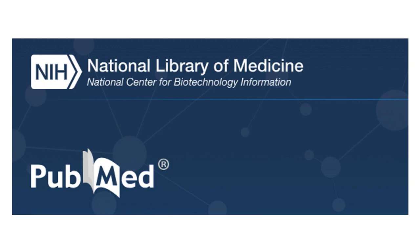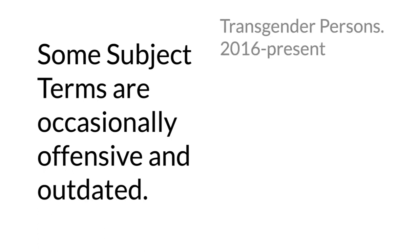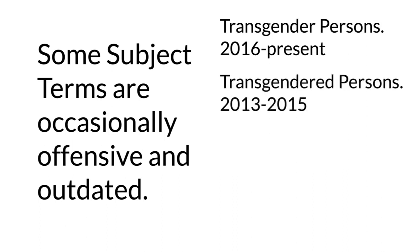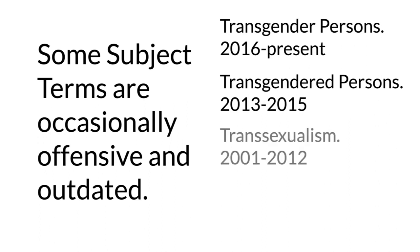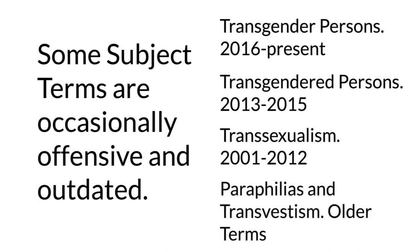One final thing to be mindful of when using subject terms is that they occasionally get updated. This is a good thing — as our knowledge and understanding of topics change, so should our language. However, the potentially dark side is that dated or offensive terminology are often still attached to older articles. For example, the term 'transgender person' entered PubMed's medical subject heading system in 2016. Before that, it was 'transgendered persons' from 2013 to 2015, and 'transsexualism' from 2001 to 2012, with previous terms including 'paraphilias' and 'transvestism.'